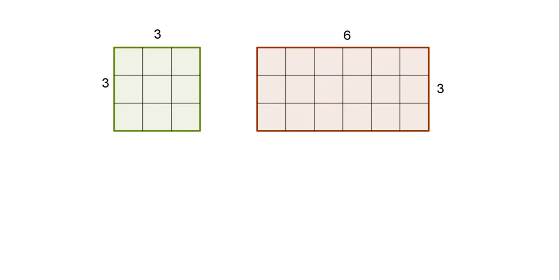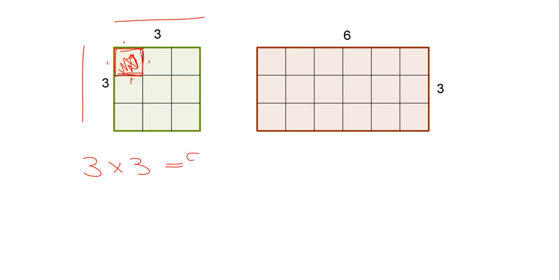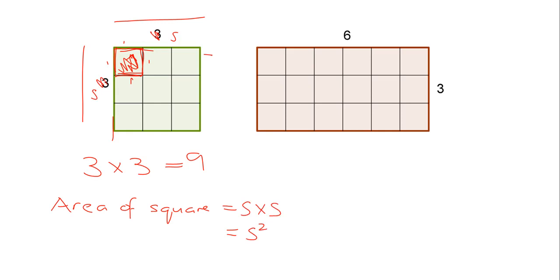You should remember from work you've done previously that what you're asking yourself is: for these little squares that all have a side length of one, how many of these unit squares make up that whole green area? You can see there are three across and three down, so in total there are three times three which is nine. This gives us a nice formula for the area of a square — if the square has a side length s, there'd be s going down and s going across, so we've got s times s, which is s squared.